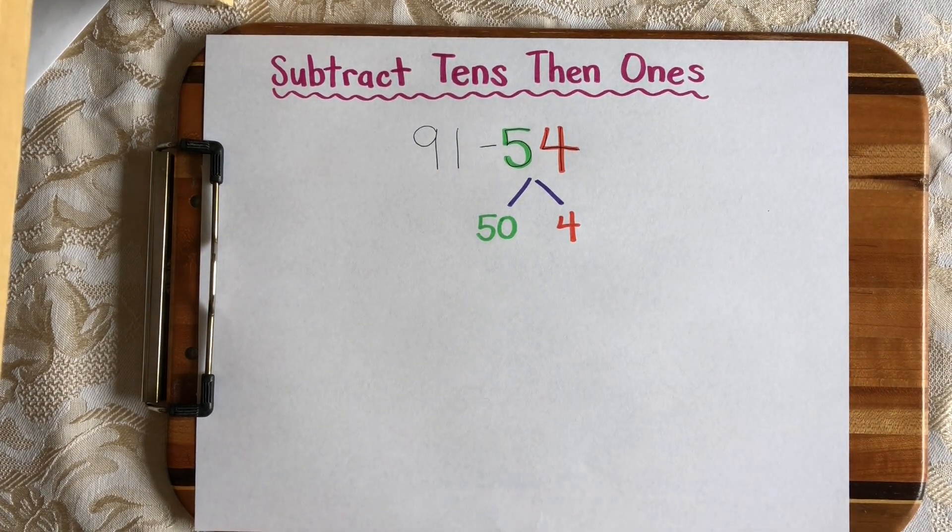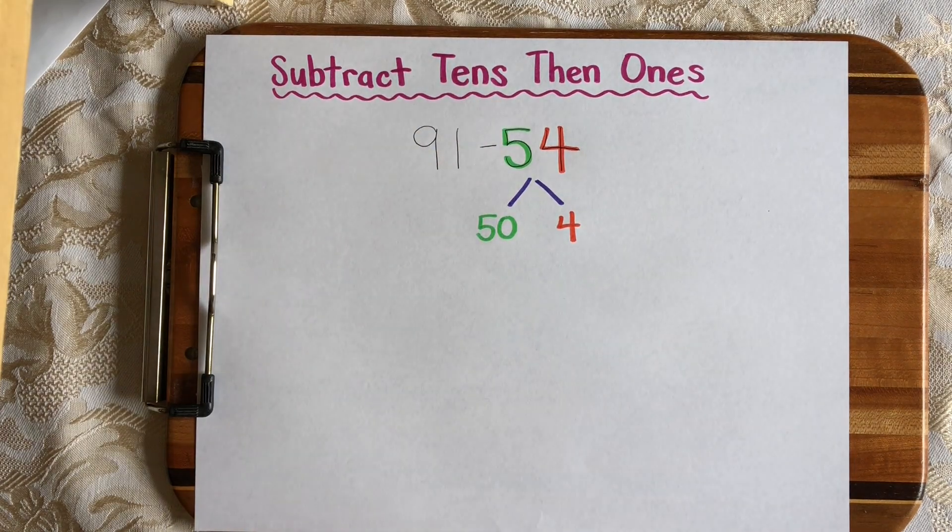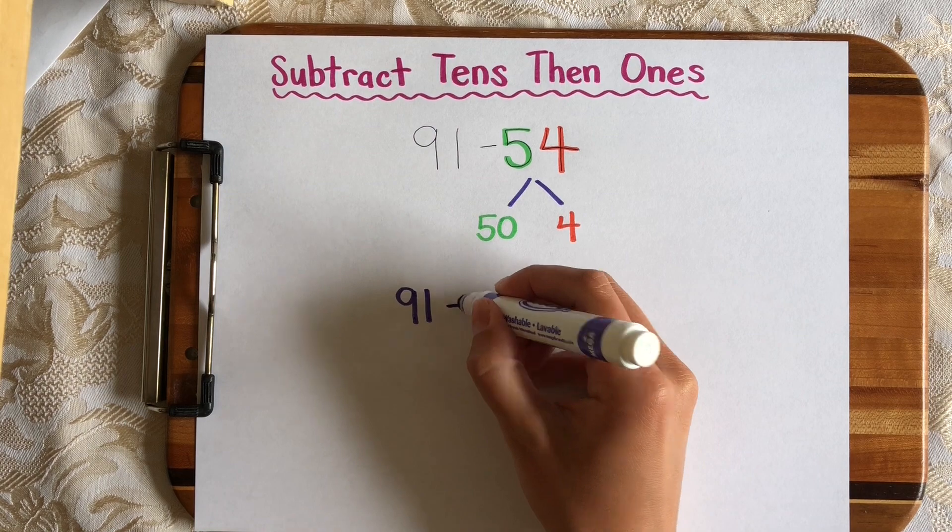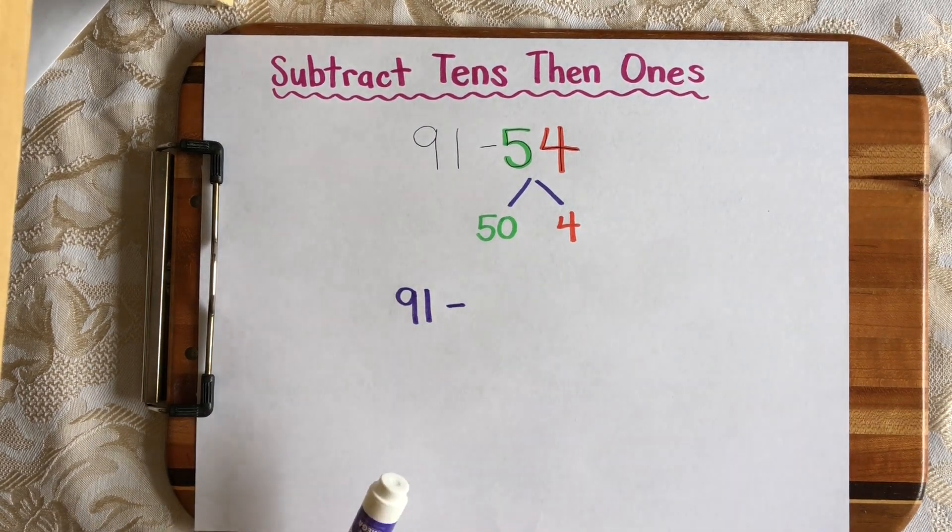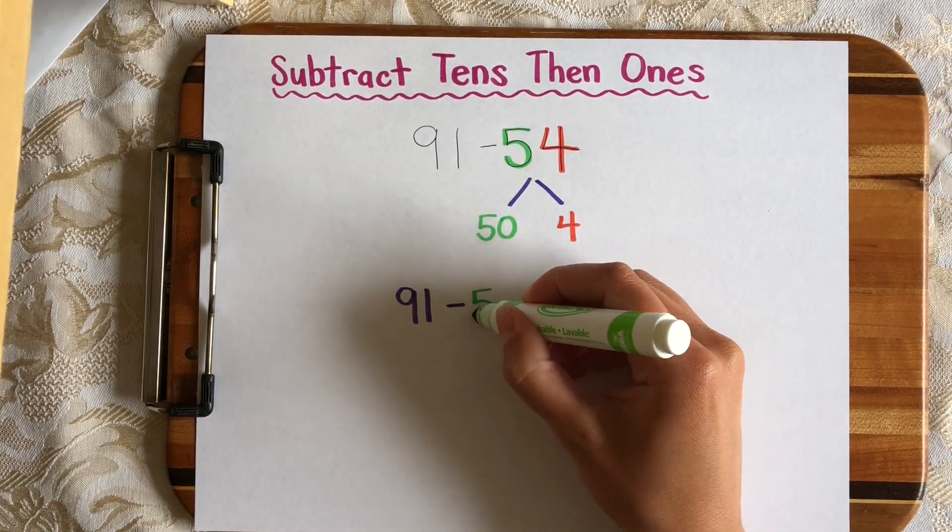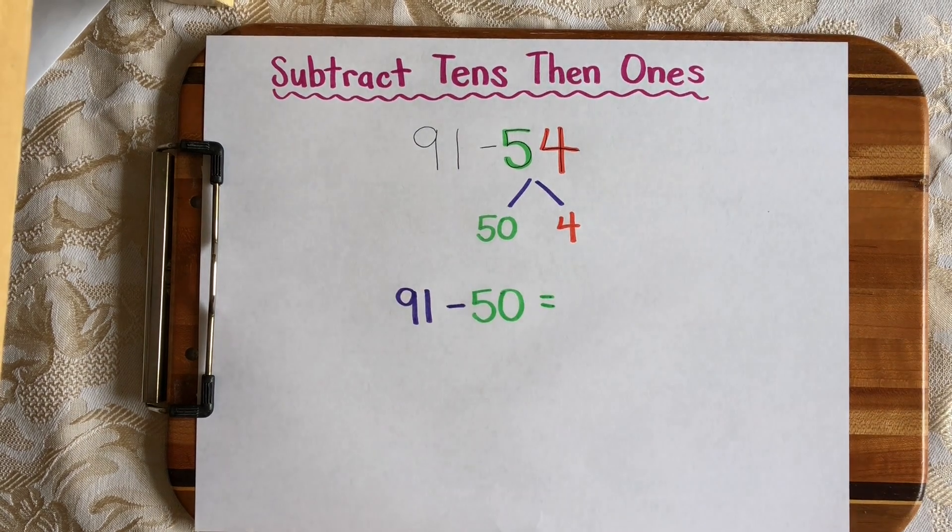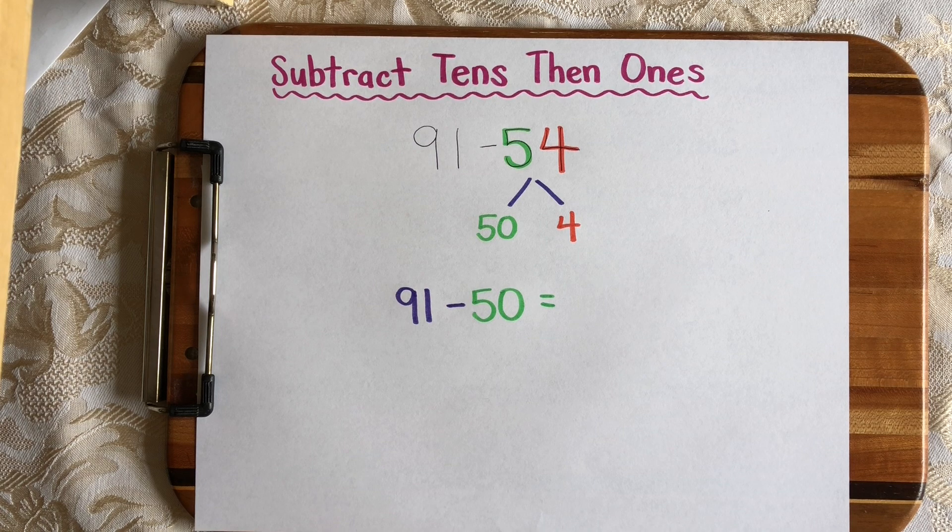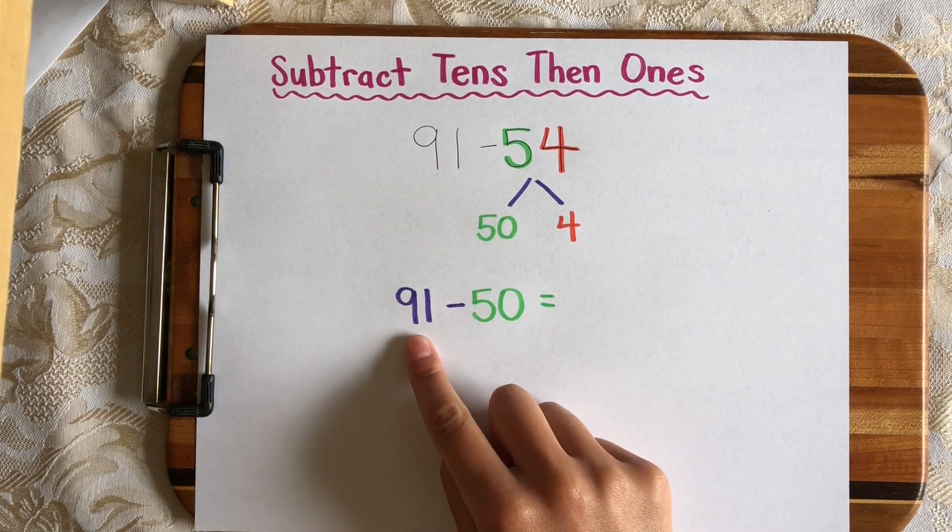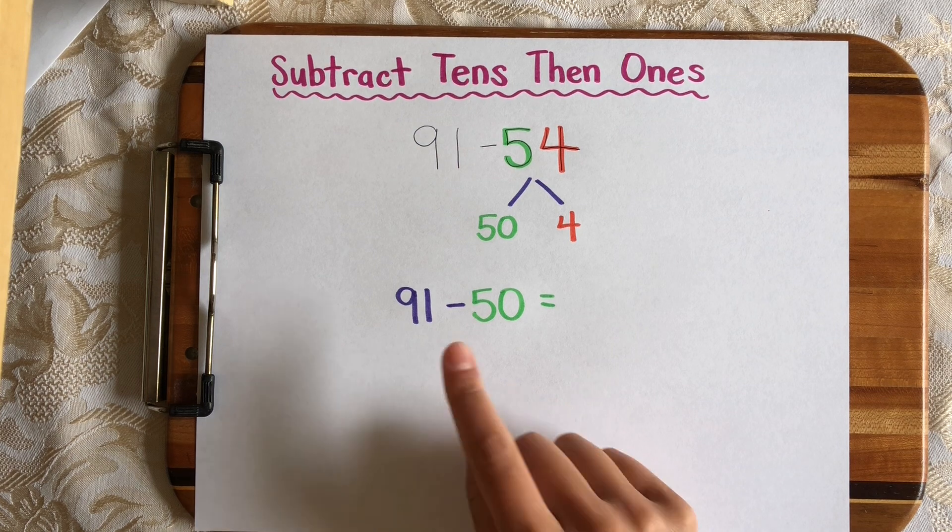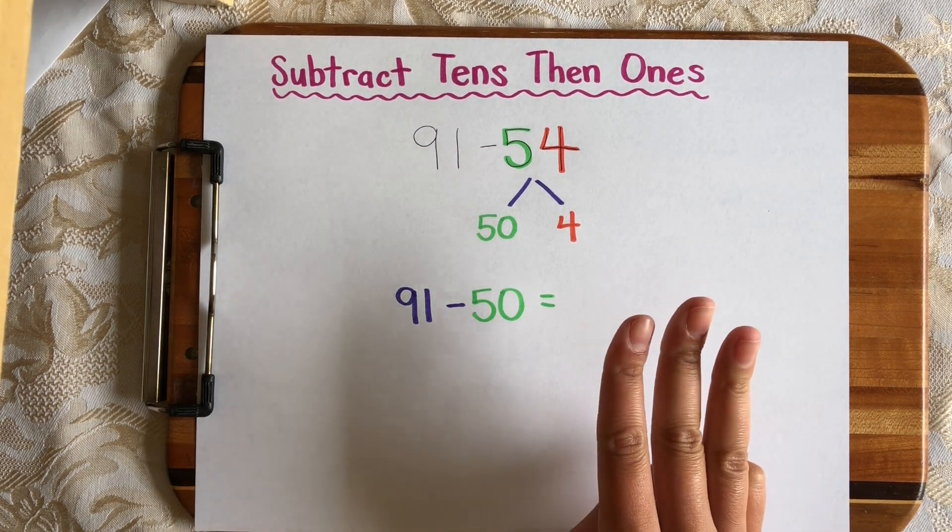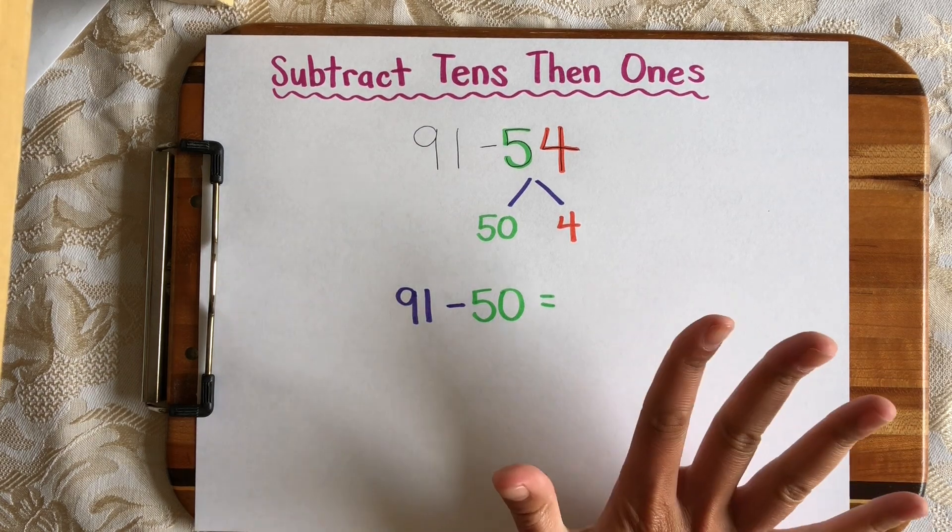Now I'm ready to subtract my 10s from my first number. So I'm going to start with 91 and subtract 10s, which is the first part of my strategy. So 91 subtract 50. So I can count back because I know how to count back by 10s starting from any number. So 91 back 10 is 81, 71, 61, 51, 41.